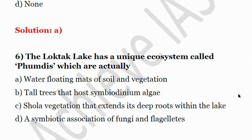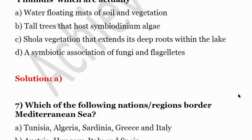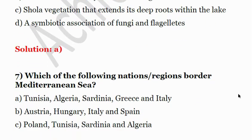Sixth question: The Loktak Lake has a unique ecosystem called Phumdis. The options are: A — water floating mats of soil and vegetation; B — tall trees hosting symbiodinium algae; C — shola vegetation with deep roots within the lake; D — a symbiotic association of fungi and flagellates. The answer is A — water floating mats of soil and vegetation.